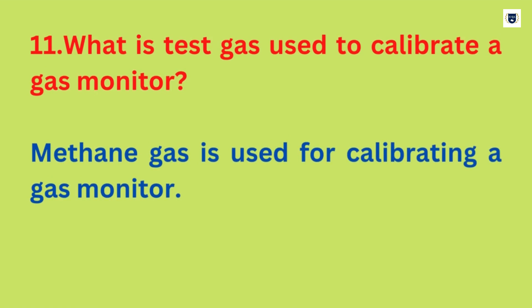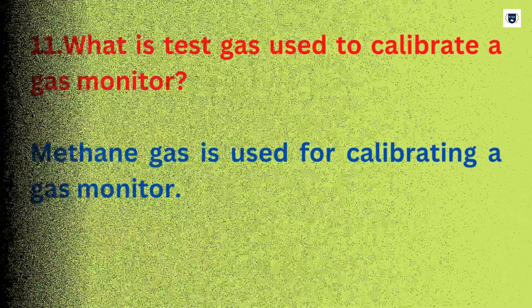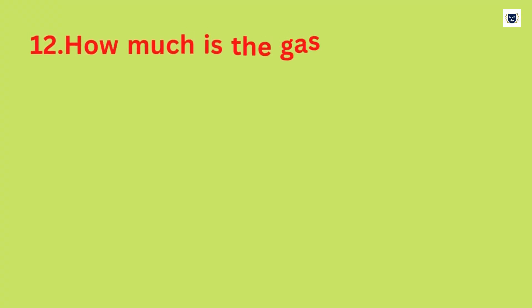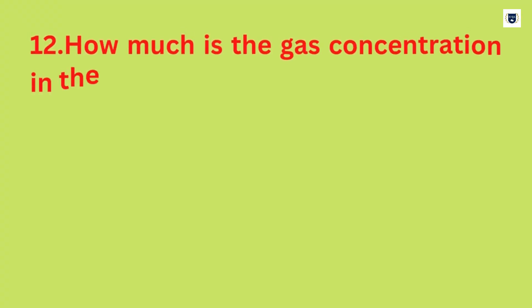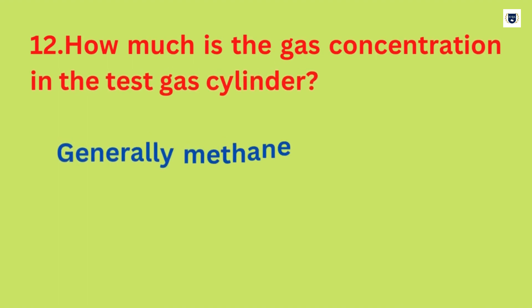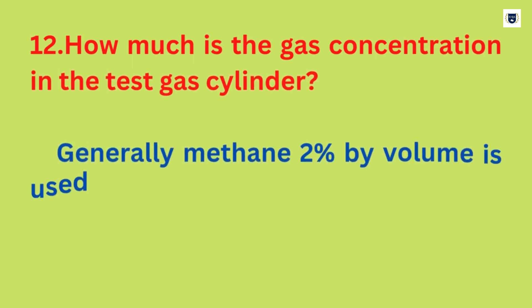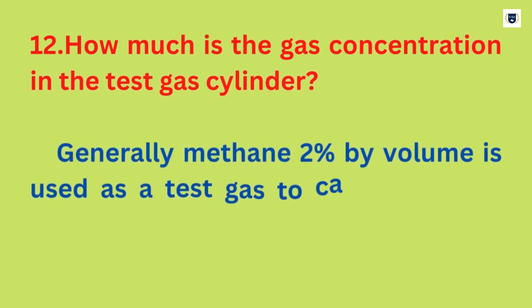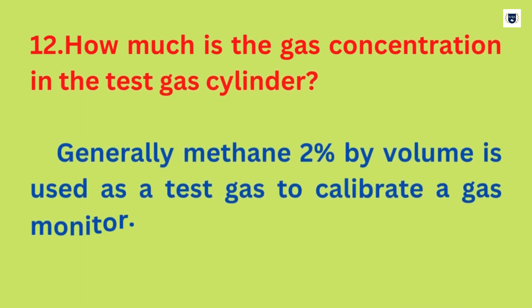What is the test gas used to calibrate a gas monitor? Methane gas is used for calibrating a gas monitor. Generally, methane at two percent by volume is used as the test gas to calibrate a gas monitor.